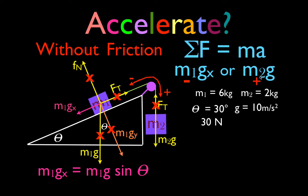M2G is just simply M2 times g, which is 20. So there's a force from M1GX that's 30 newtons down. This one is 20 newtons in the other direction, and that means in this case these two objects are going to accelerate in the negative direction.